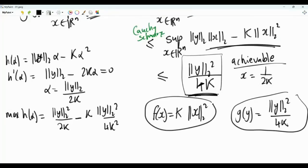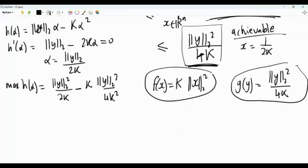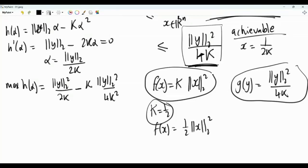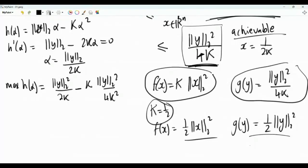Observe that f is proportional to the L2 norm squared, and so is g. In fact, if we choose k = 1/2, then f(x) = (1/2)||x||² and g(y) = (1/2)||y||². So the function (1/2)||x||² maps to the exact same function under the Legendre-Fenchel transform. Thus, (1/2) times the L2 norm squared is a fixed point of the Legendre-Fenchel transform. The interesting question is: are there other functions with this property — that if you take the Legendre-Fenchel transform, you get the same function back?